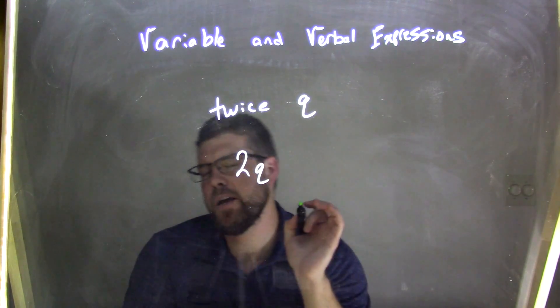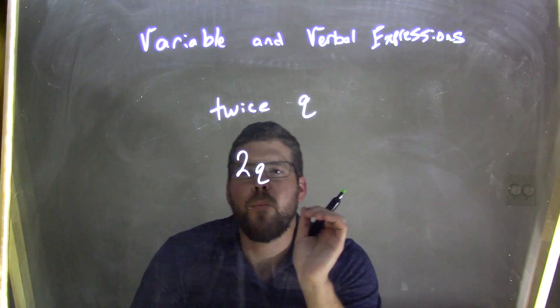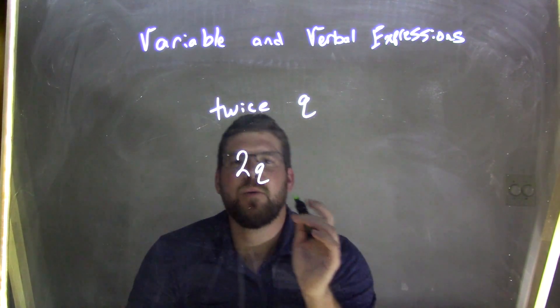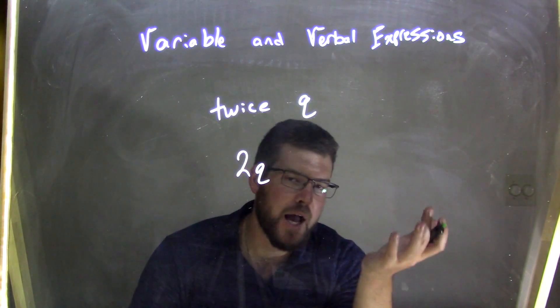Now you don't need to put the multiplication there in between. You can, but generally you won't necessarily write it like that. You mean 2Q, meaning 2 times Q.